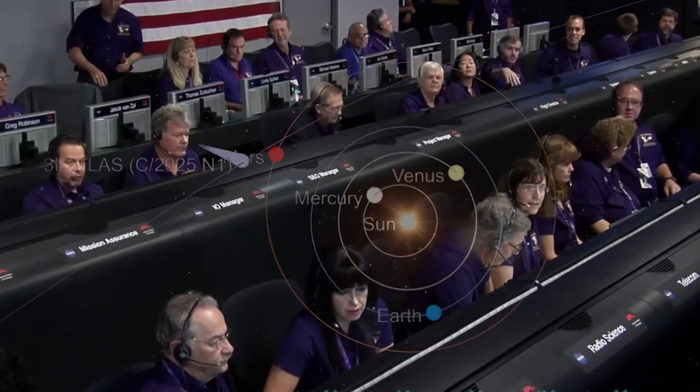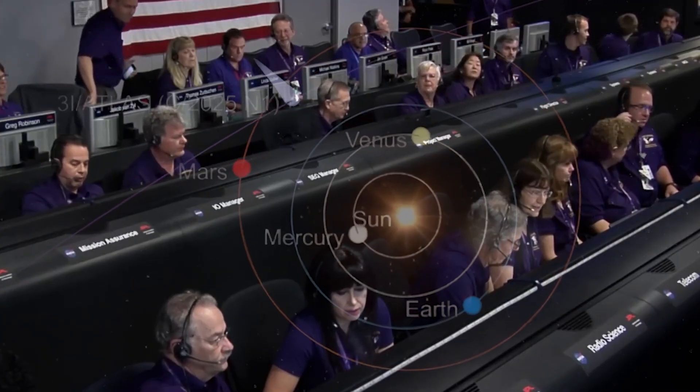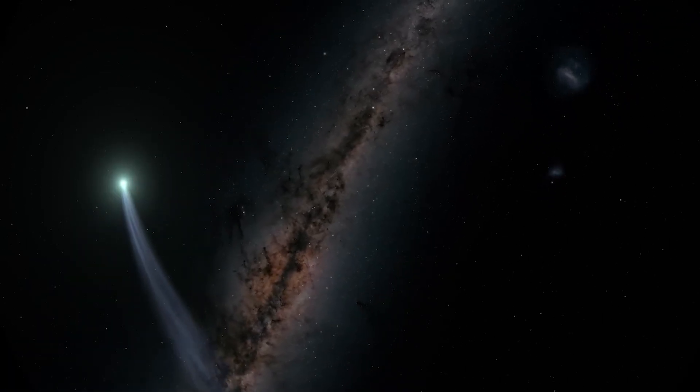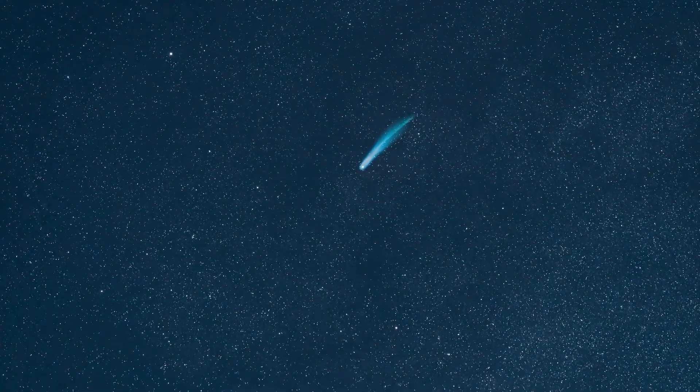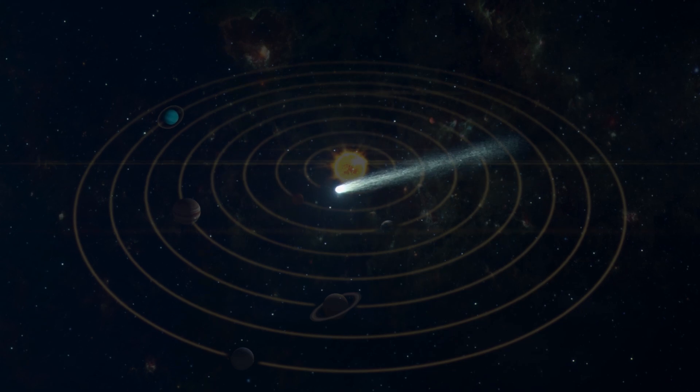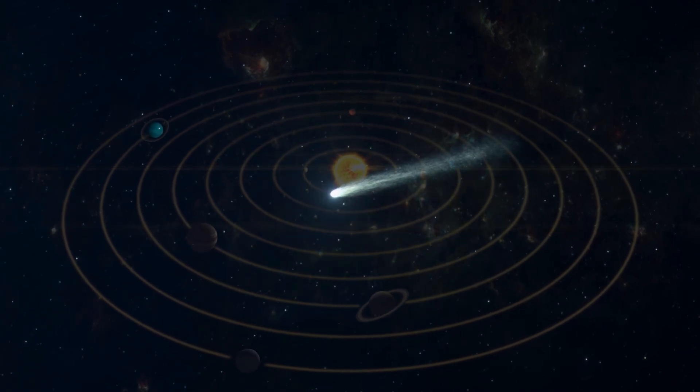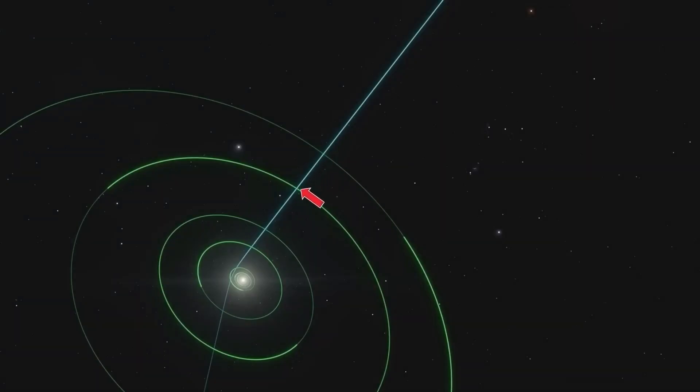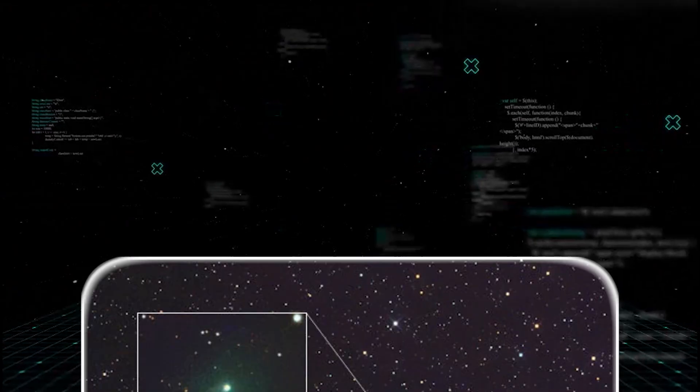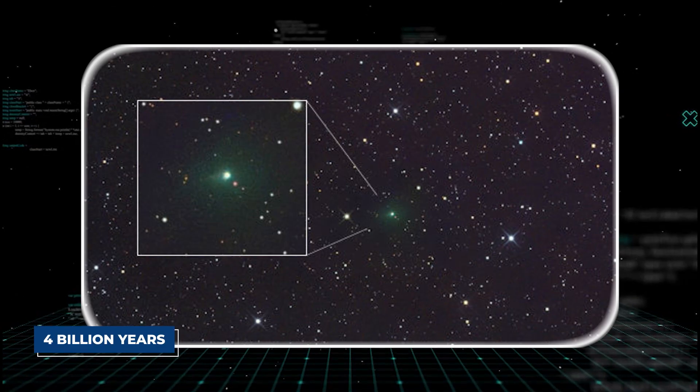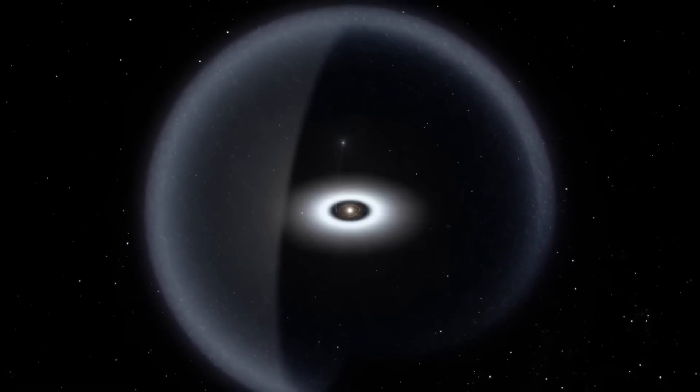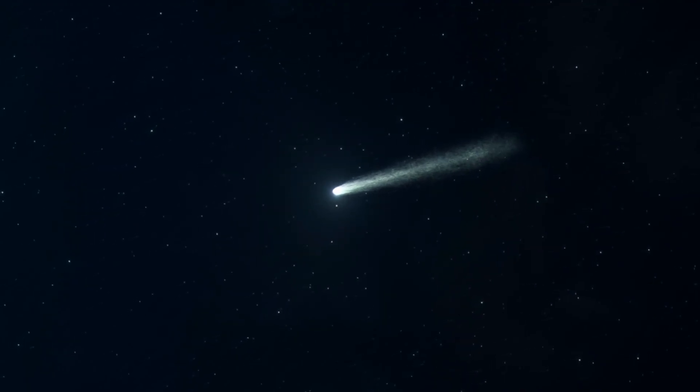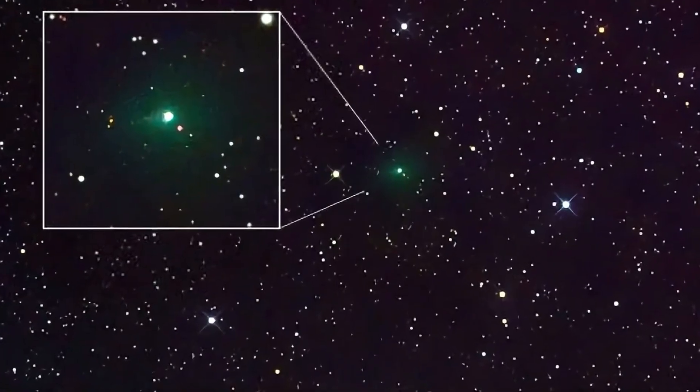Based on its trajectory, scientists believe 3I Atlas is a long-period comet, meaning its orbit takes thousands, if not tens of thousands of years to complete. Most of these comets are thought to originate in the Oort Cloud, that vast, mysterious shell of icy debris left over from the formation of the solar system, extending out nearly a quarter of the way to the next star. These objects are like time capsules, preserved in a deep freeze for over 4 billion years. When one of them gets nudged out of its orbit and falls toward the sun, it gives us a rare glimpse into the primordial soup from which the planets were born. However, the chemical data from 3I Atlas throws a wrench in that whole theory.